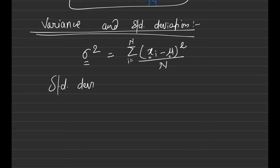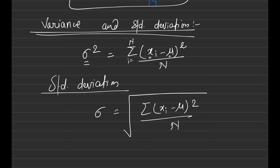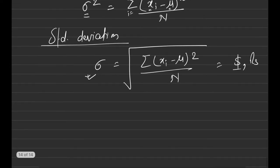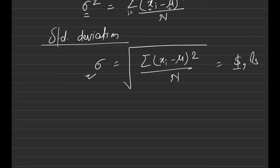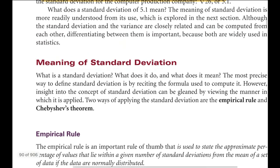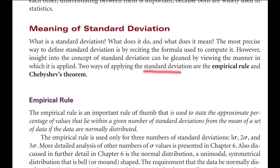That's why we use standard deviation, which brings the unit back to the same scale. Standard deviation (σ) is simply the square root of variance — the formula is the same but we take the square root at the end, giving us the same unit (rupees, dollars, etc.). Standard deviation is most commonly used in statistics. There are two theorems that help us apply it: the empirical rule and Chebyshev's theorem.